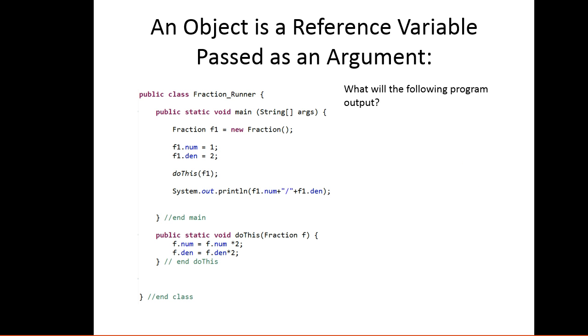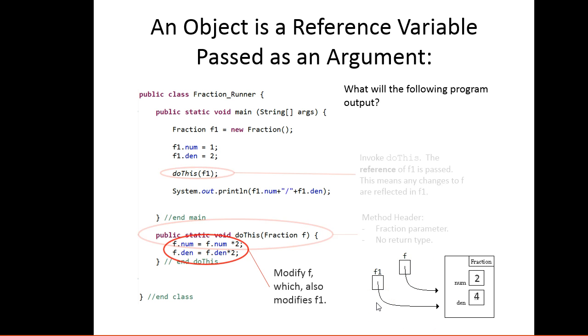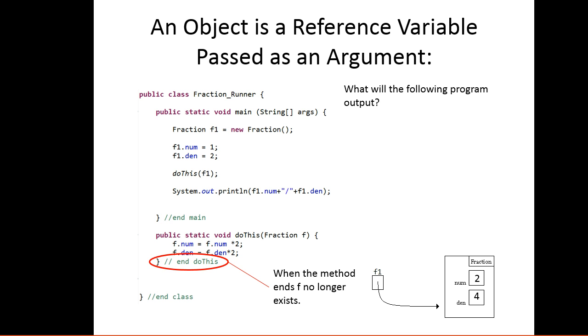Let's look at this same idea but in context to methods. What is this program going to output? Again, I create a fraction object called f1 and put some values into it. Then I invoke this method called do this. Very important here: I'm not passing a whole new object, I'm passing a reference to where the object is. We can see here on the diagram: f1 and f point to the same object. So if I change f, that's also going to change f1. When the method is done, f will disappear - it no longer exists - but those changes are going to remain.